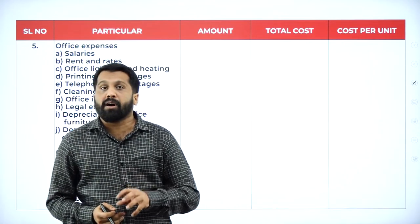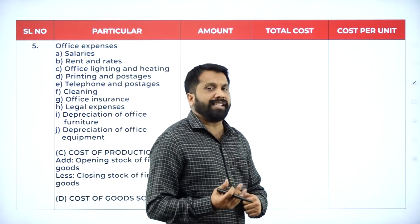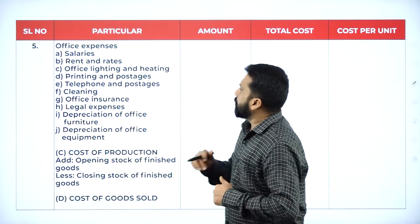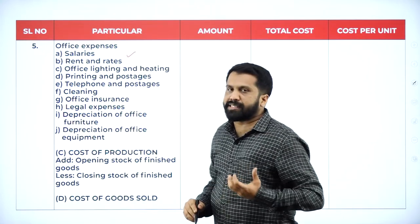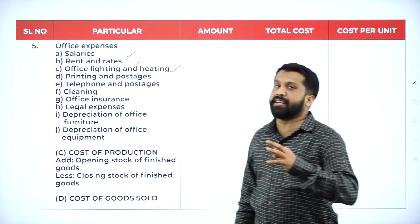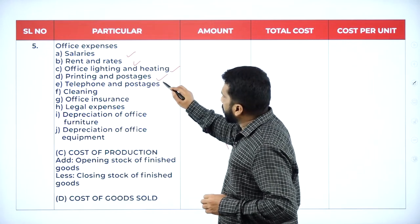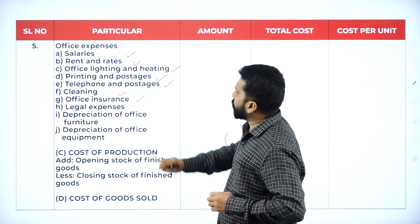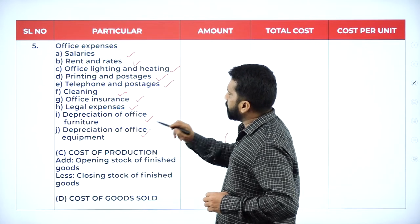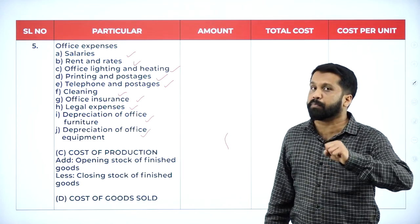Once done with work cost, the next step is office and administration expenses. Assume you are running an office — expenses include: salary, rent, office lighting and heating charges, printing and postages, telephone, cleaning, office insurance, legal expenses, depreciation of office equipment. These are the expenses under office and administration.